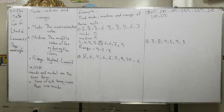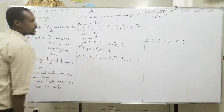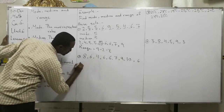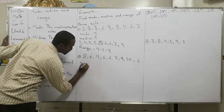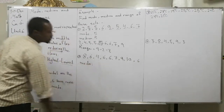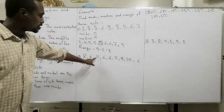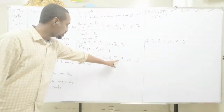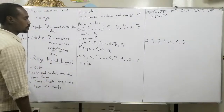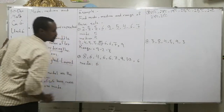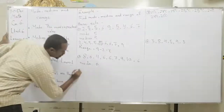In the same way, let's solve question number two: 8, 6, 4, 6, 6, 7, 9, 7, 6. Mode is the most repeated number. Let's see — looking at the numbers, six appears four times. That means six is the most repeated number. Mode is six.